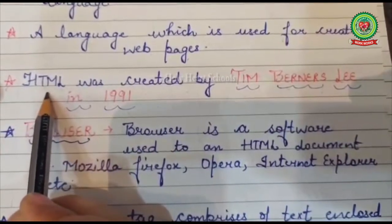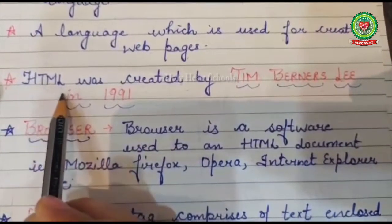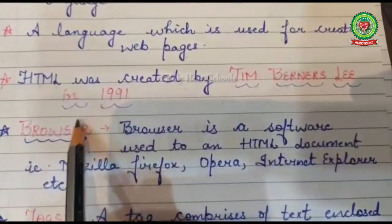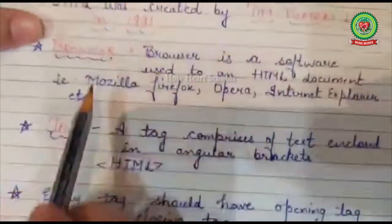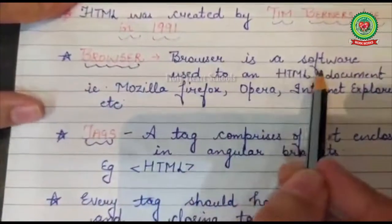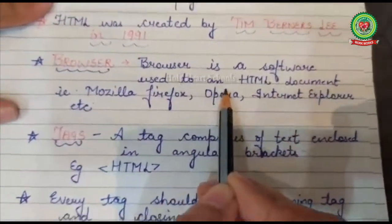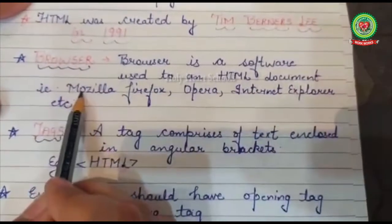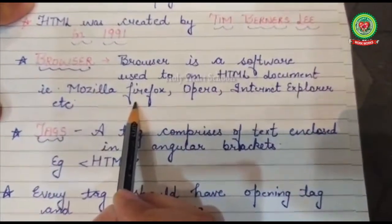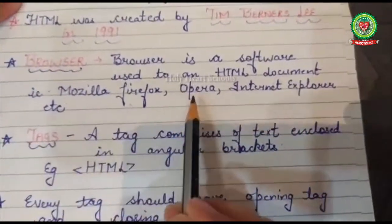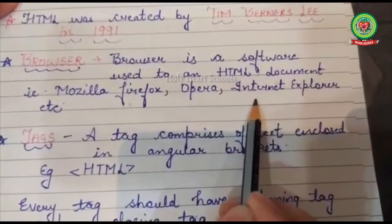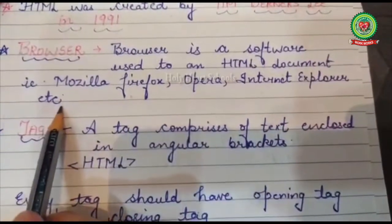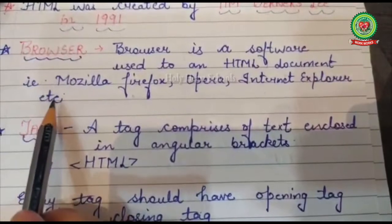When we make a web page, we have to use a browser that opens our web pages. So, what is a browser? A browser is a software used to view an HTML document. Examples include Mozilla Firefox, Opera, Internet Explorer, and so on.